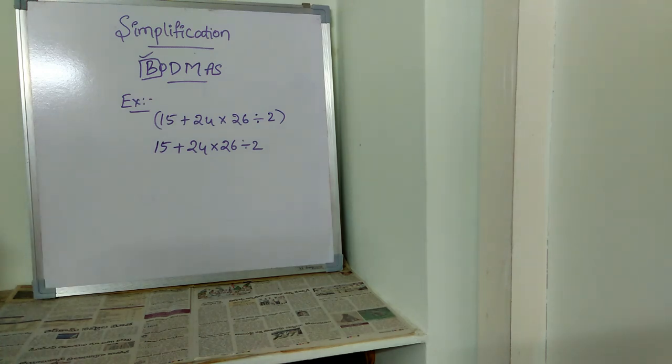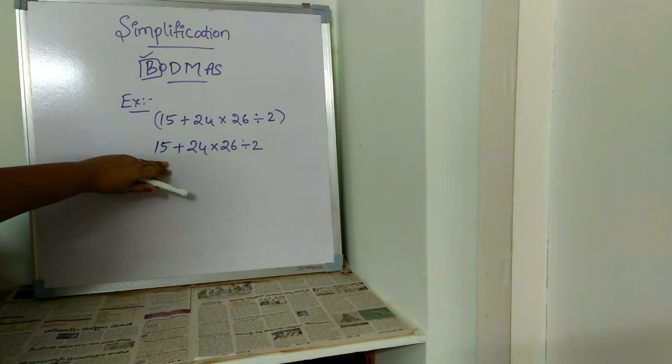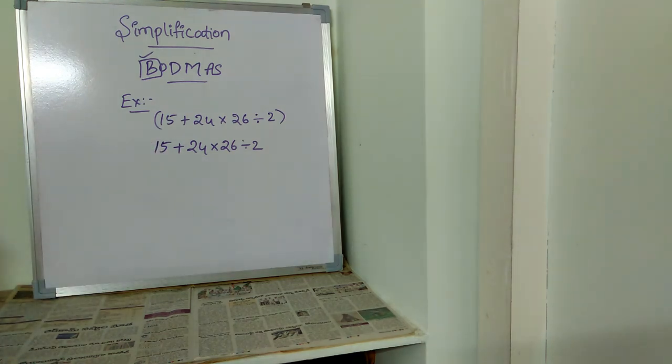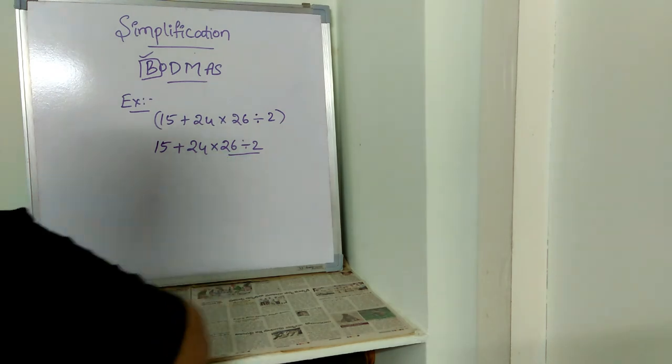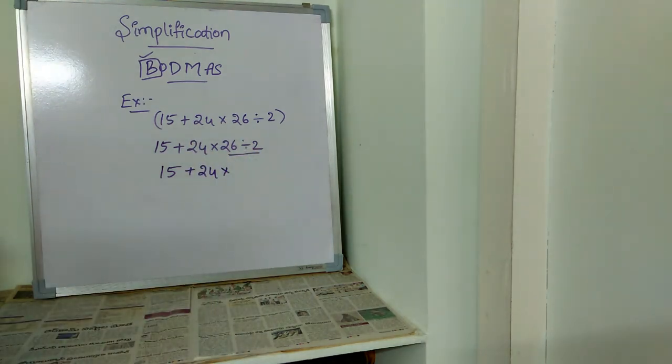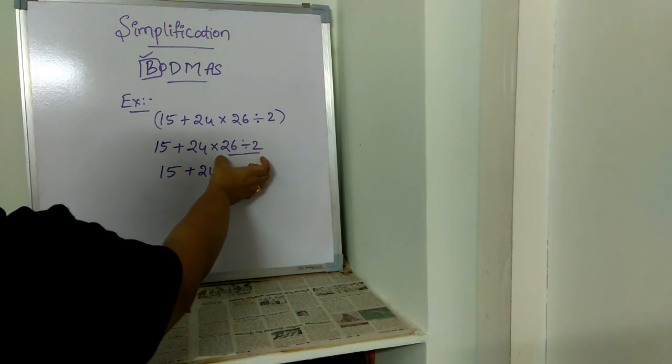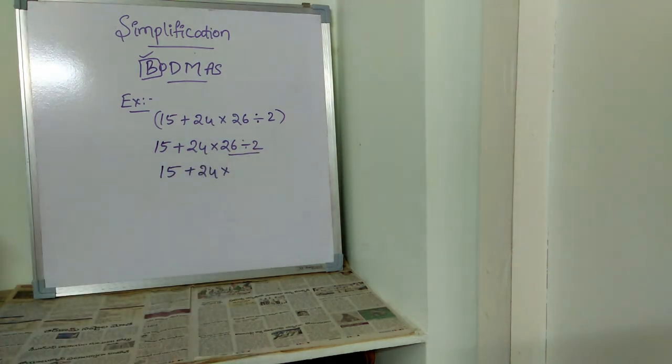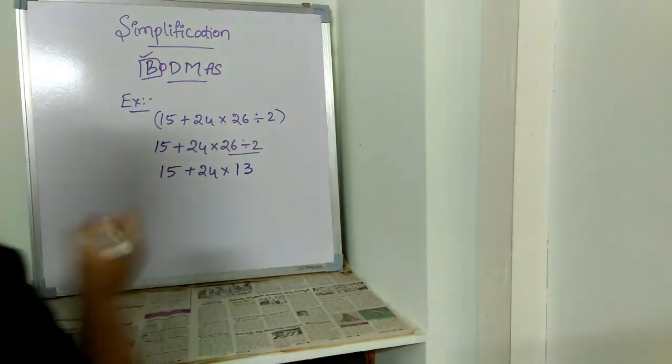Next is D. D stands for division. Now from this, we have to solve this problem using division method. Where is division? We have division here: 26 divided by 2. Now we're solving division. 15 plus 24 into 26 divided by 2. After solving 26 divided by 2, we will be getting 13.